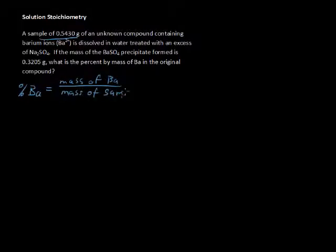Let's talk about first what it is we're looking for, and that is percent barium. So percent barium in the initial sample, that's this sample. Well, that equals the mass of the barium divided by the mass of the sample, and that is then multiplied by 100%, so you get your percent.